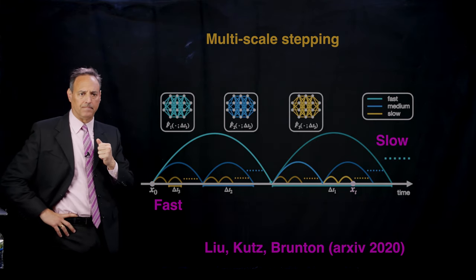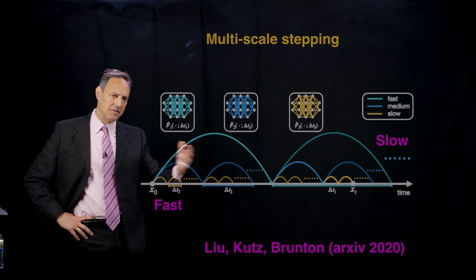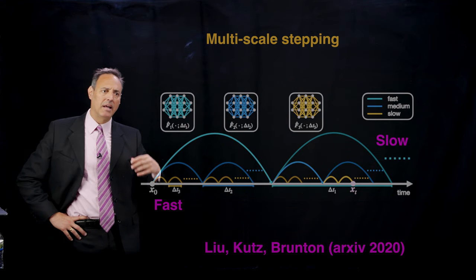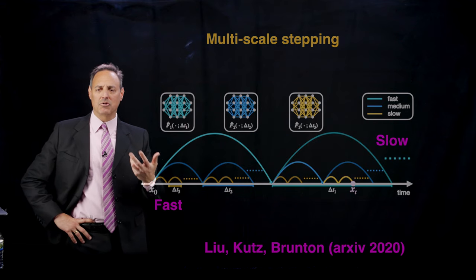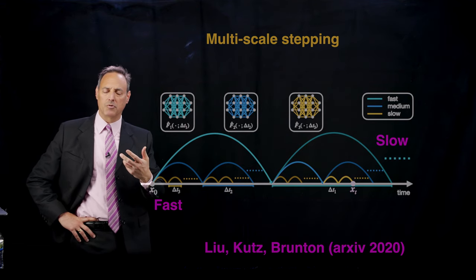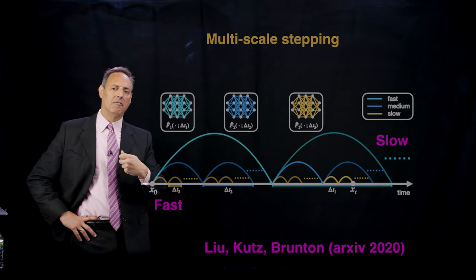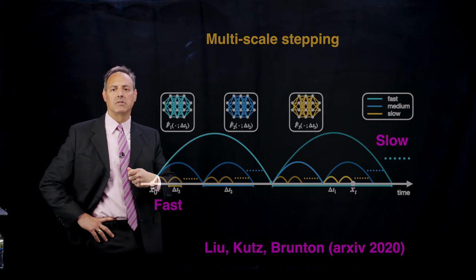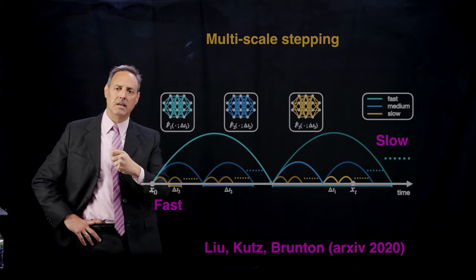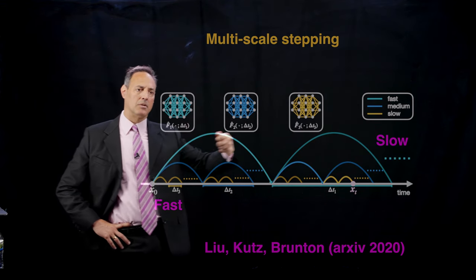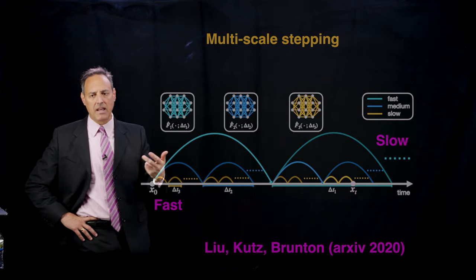Now we want to modify this and start thinking about multi-scale stepping schemes. Normally in a time course of events measuring a system, you might have some fast-scale physics and some slow-scale physics. This is always a really interesting dilemma in numerical computations because the fast-scale physics essentially imposes a very significant limitation on your ability to simulate systems long-time. You have to resolve the fast-scale physics very accurately in order to produce some kind of very long time behavior.